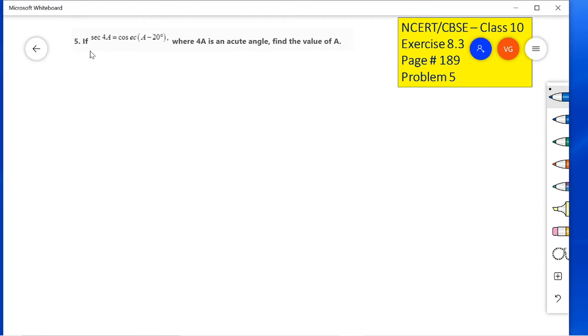The problem: If secant 4A equals cosecant (A minus 20 degrees), where 4A is an acute angle, find the value of A. So, the given condition here is 4A is less than 90 degrees, and we need to find the value of A.